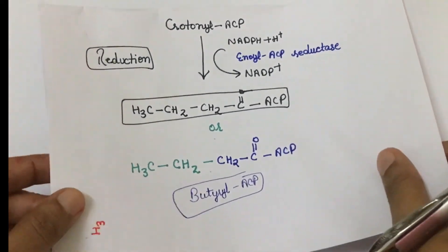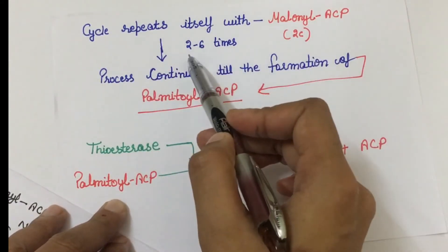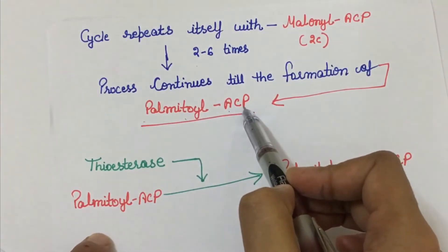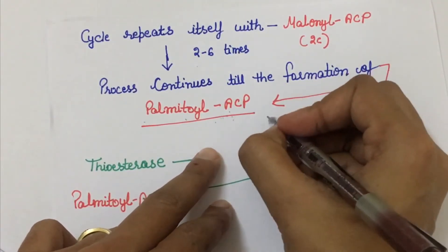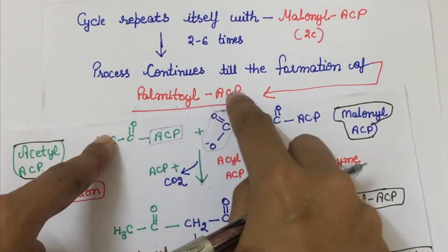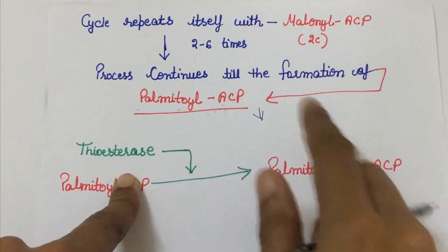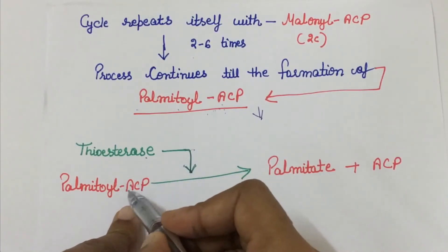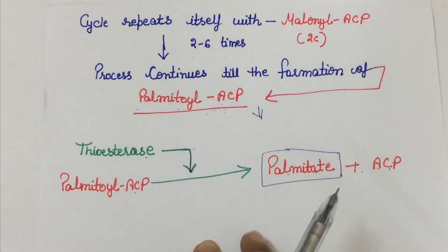This cycle will now repeat itself four to six times with malonyl-ACP. The process will continue until the formation of palmitoyl-ACP. Further elongation of palmitoyl-ACP is not accepted by the acyl-malonyl ACP condensing enzyme — palmitoyl-ACP cannot be elongated further through this enzyme. So thioesterase enzyme will work here and split it into palmitate and ACP. This palmitate is our first fatty acid formed in fatty acid biosynthesis.